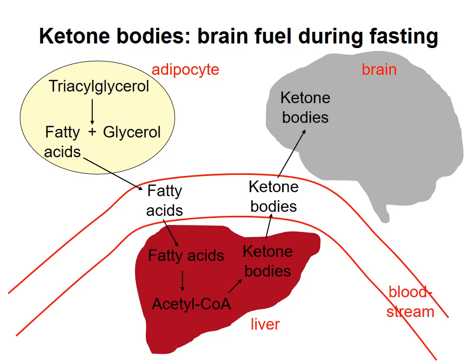The brain picks up these ketone bodies, converts them back into acetyl-CoA, and uses the acetyl-CoA in the citric acid cycle and oxidative phosphorylation to produce ATP.